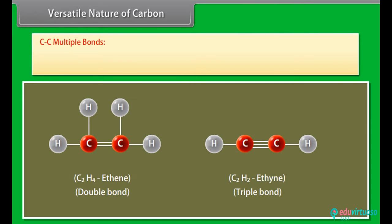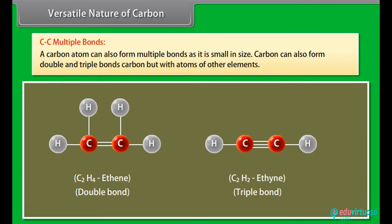Carbon-carbon multiple bonds. A carbon atom can also form multiple bonds as it is small in size. Double and triple bonds can also be formed with not only carbon but with atoms of other elements like oxygen, nitrogen, and so on. These multiple bonds provide variety in the carbon compounds.